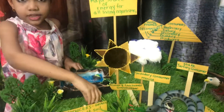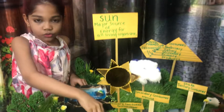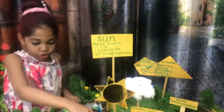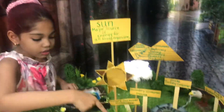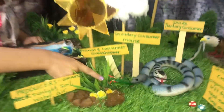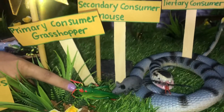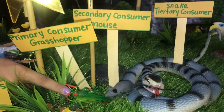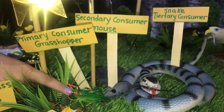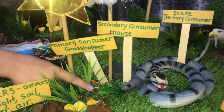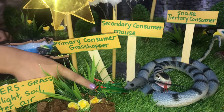In this case, the grass is the producer. The primary consumer is the grasshopper. The grasshopper is a herbivore and it gets its energy by eating the grass.